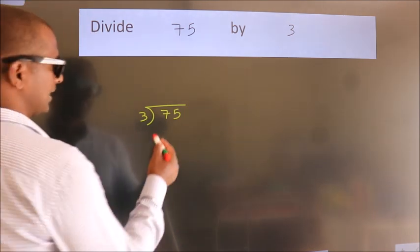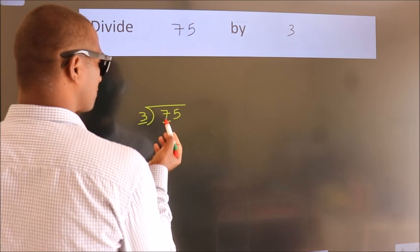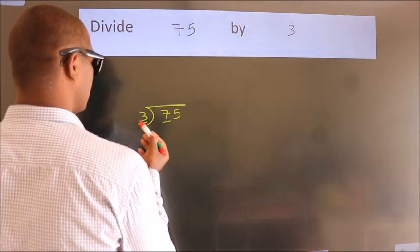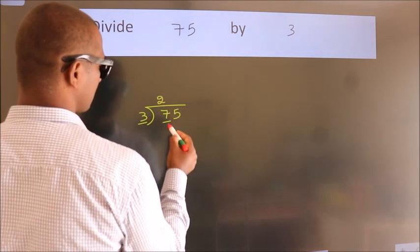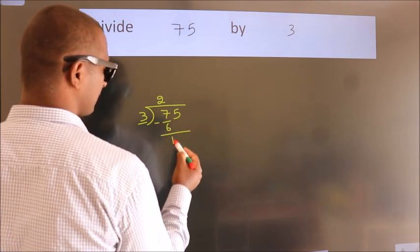Next. Here we have 7, here 3. A number close to 7 in 3 table is 3 to 6. Now, we should subtract, we get 1.